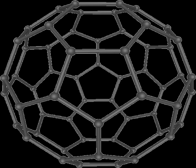Cylindrical fullerenes are also called carbon nanotubes. Fullerenes are similar in structure to graphite, which is composed of stacked graphene sheets of linked hexagonal rings. Unless they are cylindrical, they must also contain pentagonal rings.